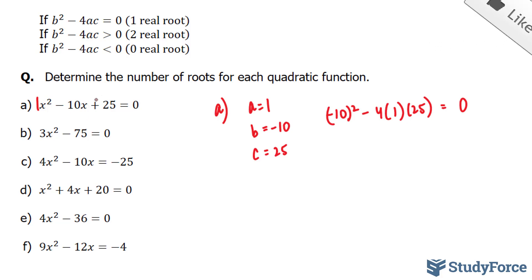Therefore, for this particular case, there would only be one real root. Let's move on to b. Here, our a value is 3, and our b value is 0. Our c value is negative 75.